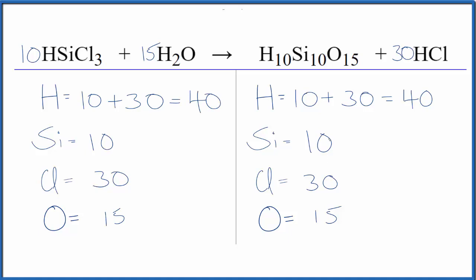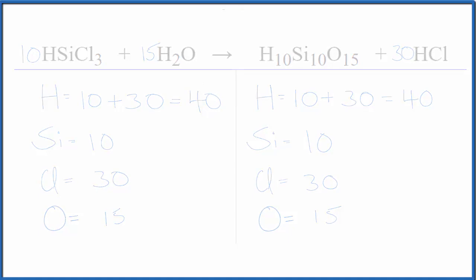The key here is to make sure you count the atoms correctly — count these hydrogens and don't forget the hydrogen out front. If you miss that one, it'll mess you up. And leave the hydrogens and oxygens till last; that's a really good strategy when balancing equations. This is Dr. B with the balanced equation for HSiCl3 plus H2O. Thanks for watching.